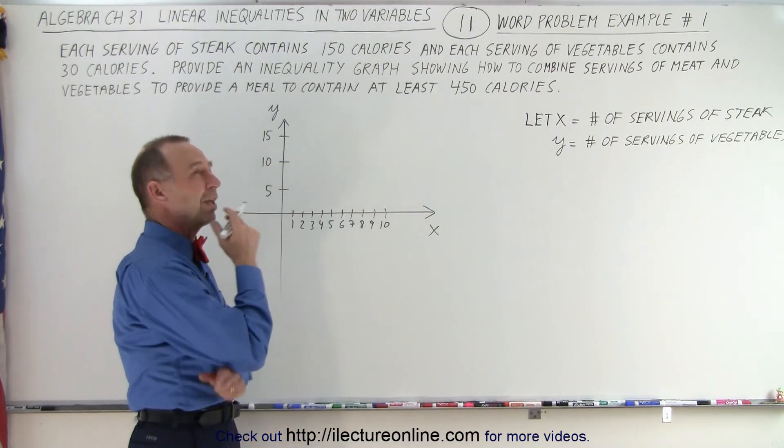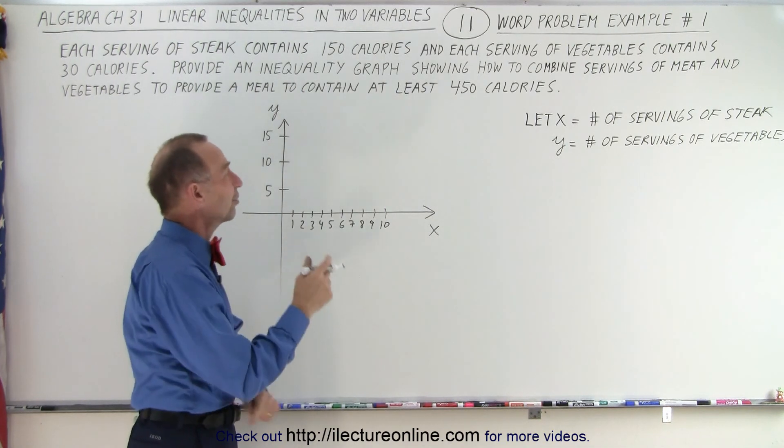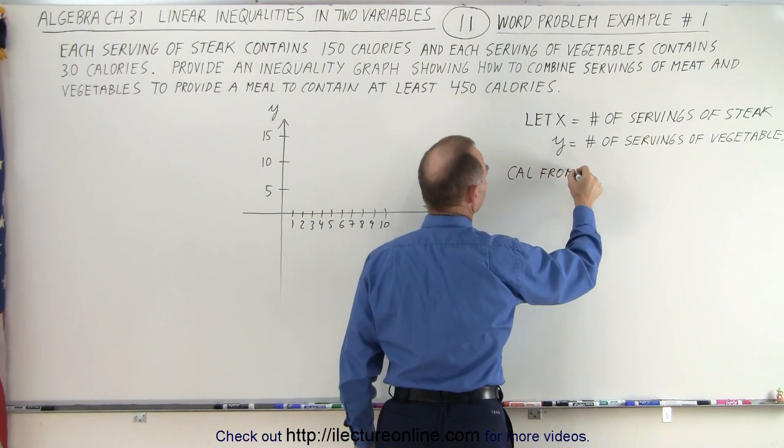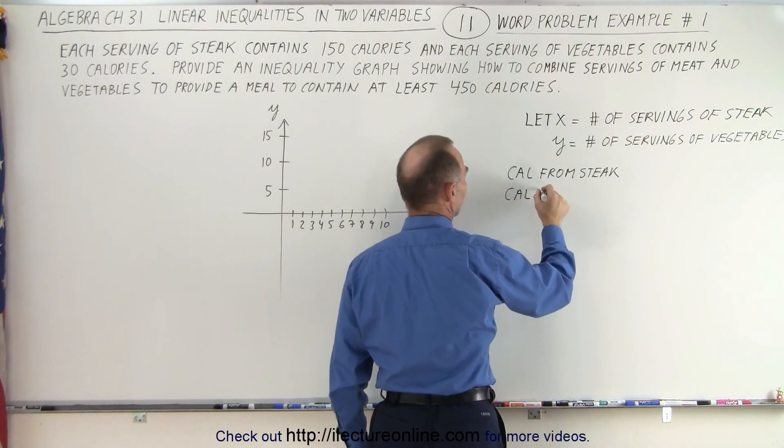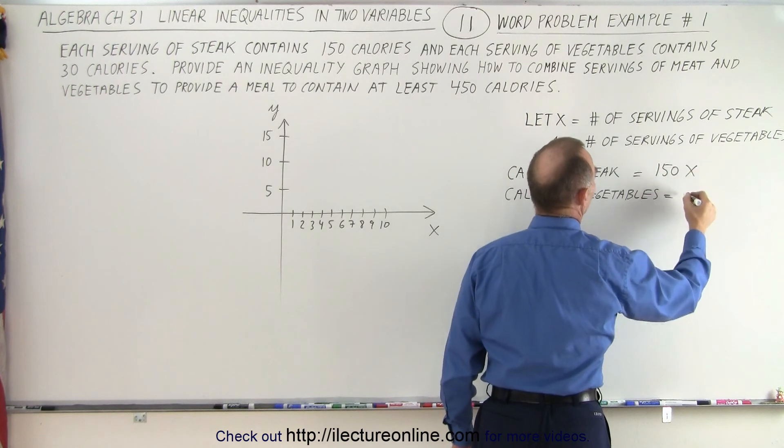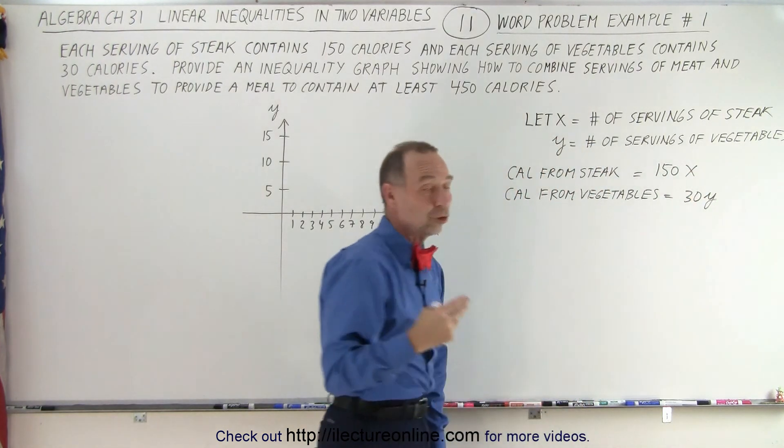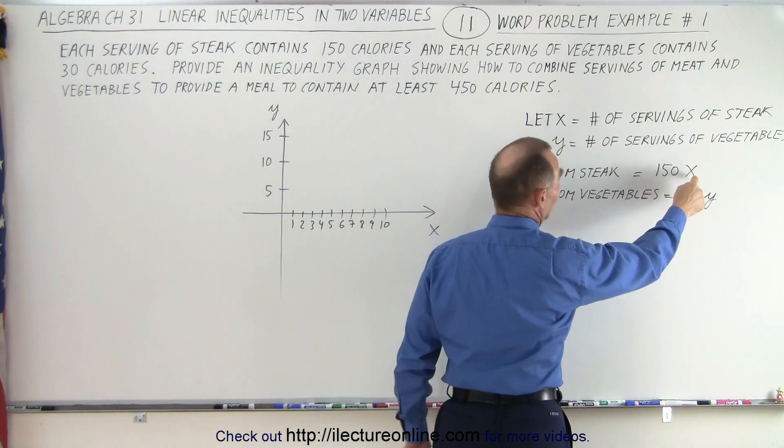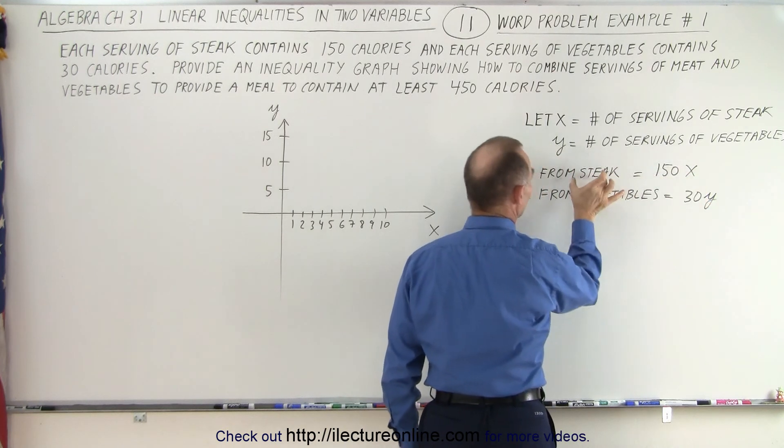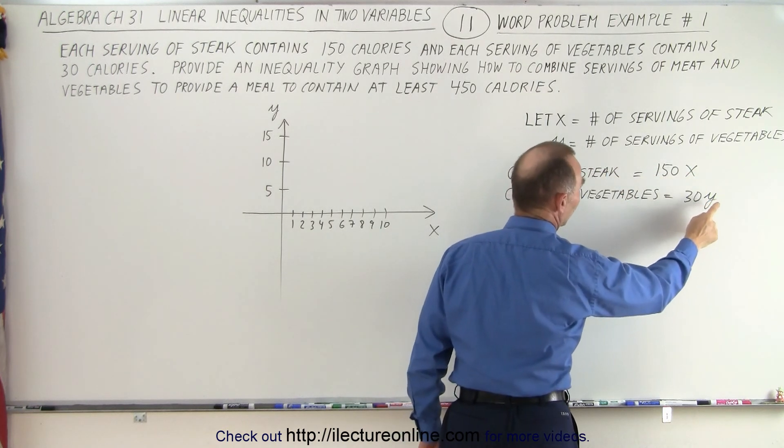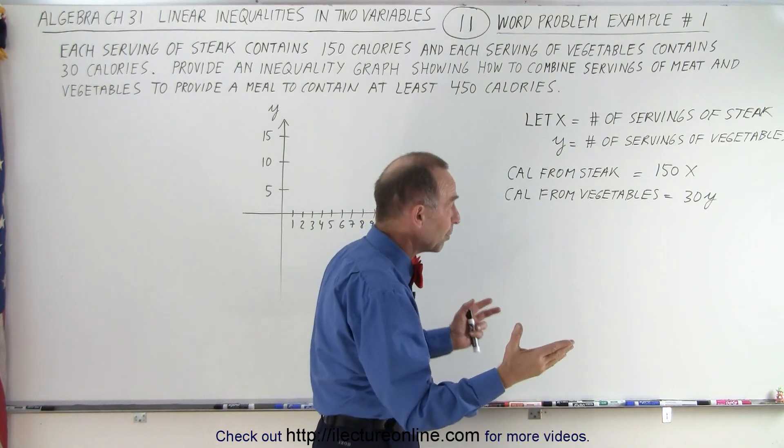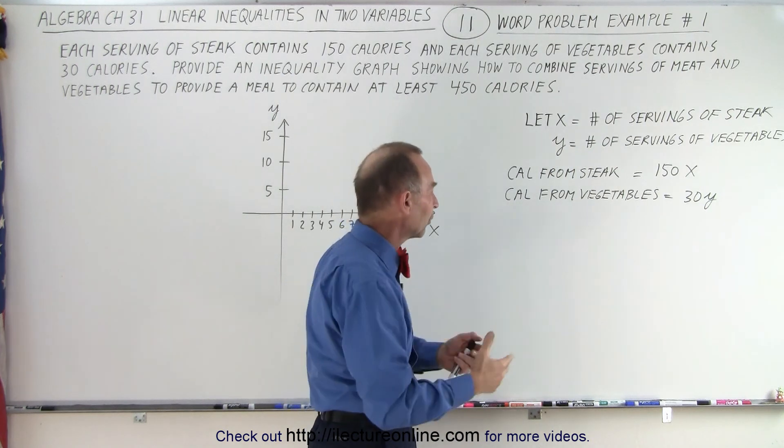How do we represent the calories from steak and the calories from vegetables? The calories from steak and vegetables can be written as 150x and 30y. If x is the number of servings of steak and each serving has 150 calories, when we multiply them together, that gives us the total calories from steak. Here we have y, the number of servings of vegetables, 30 is the number of calories for each serving of vegetable. When we multiply them together, that gives us the total calories from vegetables.